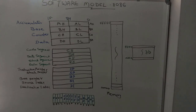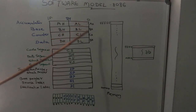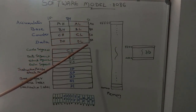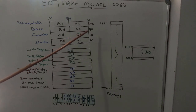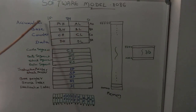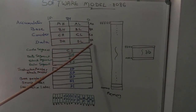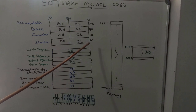This is a software model of 8086, or the programming view of 8086. Here AX, BX, CX, DX are general purpose registers. They are 16-bit registers. AX is called the accumulator, BX is called the base register, CX is called the counter register, and DX is called the data register.